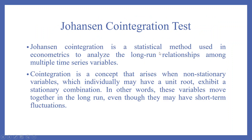The Johansen co-integration test is a statistical method used in econometrics to analyze the long-term relationships among multiple time series variables. Co-integration arises when non-stationary variables — which individually may have a unit root, meaning they are non-stationary — exhibit a stationary combination. In other words, these variables move together in the long run, even though they may have short-term fluctuations.